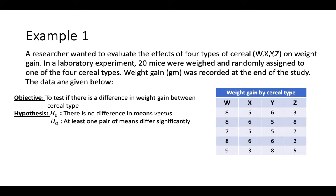Example 1: A researcher wanted to evaluate the effects of four types of cereal — W, X, Y, and Z — on weight gain. In a lab experiment, 20 mice were weighed and randomly assigned to one of the four cereal types, and weight gain was recorded at the end of the study. The objective is to test if there is a difference in weight gain between cereal types. The null hypothesis is no difference in means; the alternative is that at least one pair of means differs significantly. Random assignment to groups is an important requirement in experimental design.